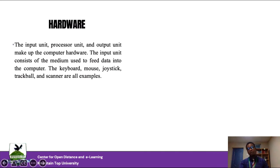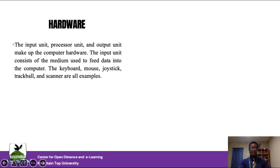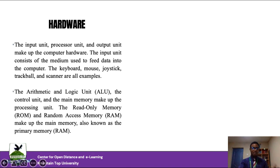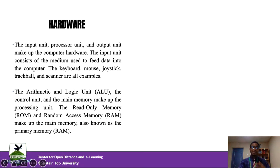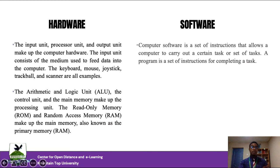The computer system, the user, and the environment make up the computing system, which is composed of hardware and software. Hardware refers to the physical entities we can see — the input unit, output unit, storage units, and all other parts of the computer. Devices under this category include the mouse, joysticks, and scanners. Inside the processor, we have the arithmetic logical unit for processing, the control unit for managing actions, and memory for storing information.